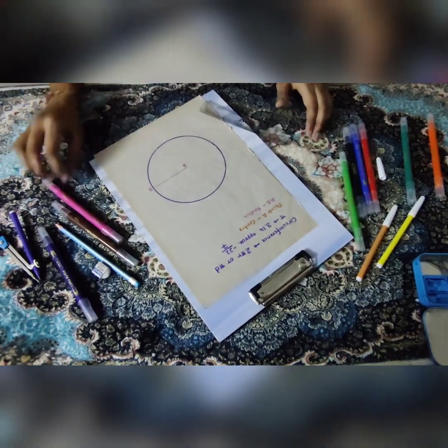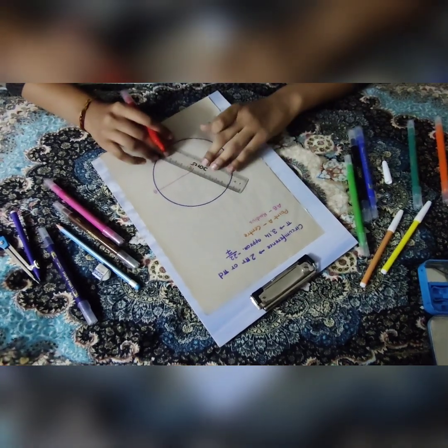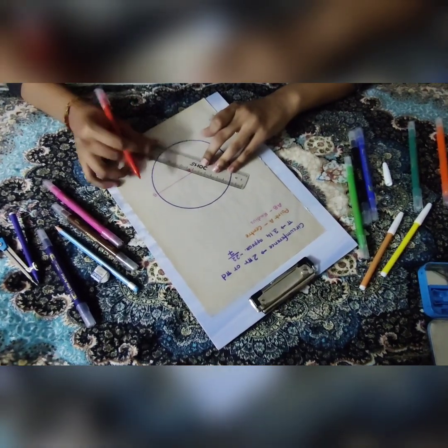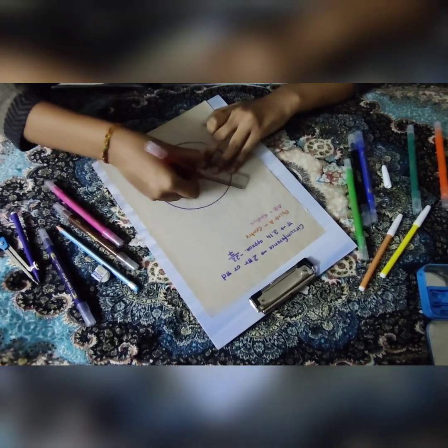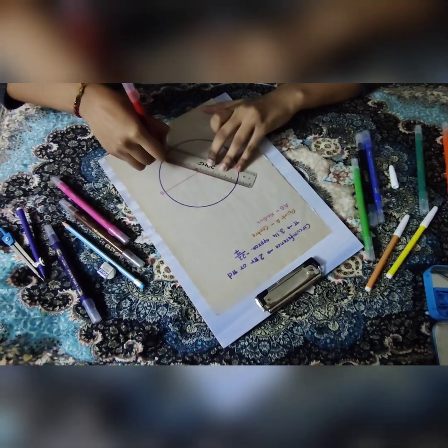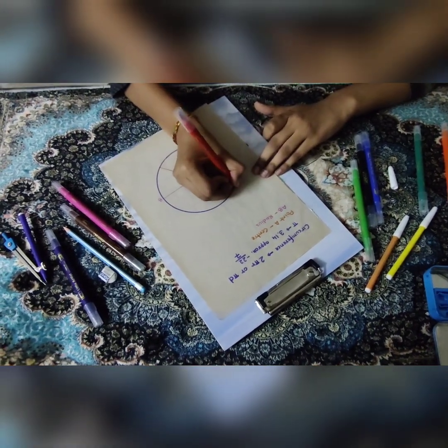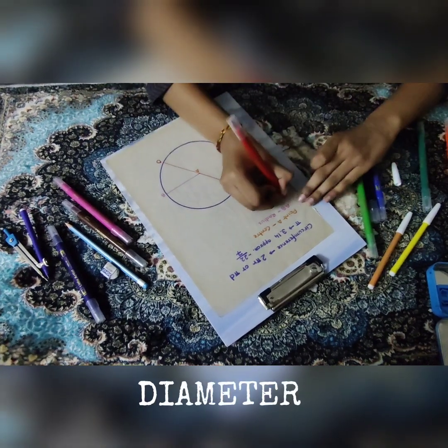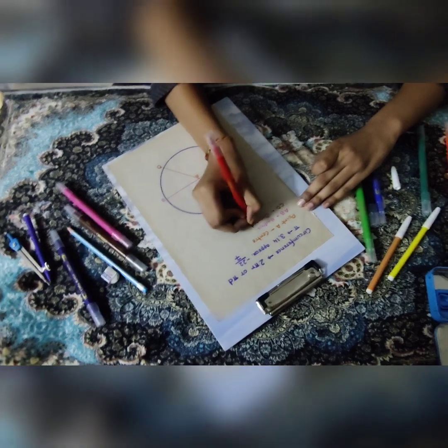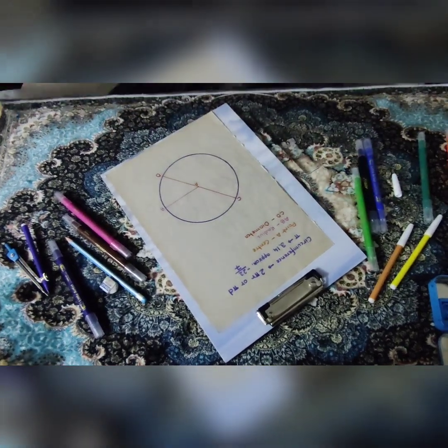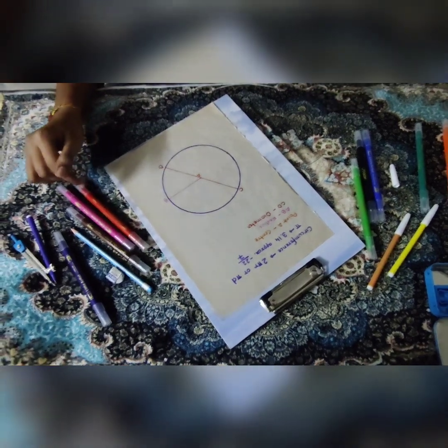The next we have is diameter. A diameter is the longest chord and it always passes through the center. One of its ends lies on one side of the circumference and the other point lies on the other side. So I am going to mark it as CD. So CD is our diameter. Diameter is basically twice the length of our radius.